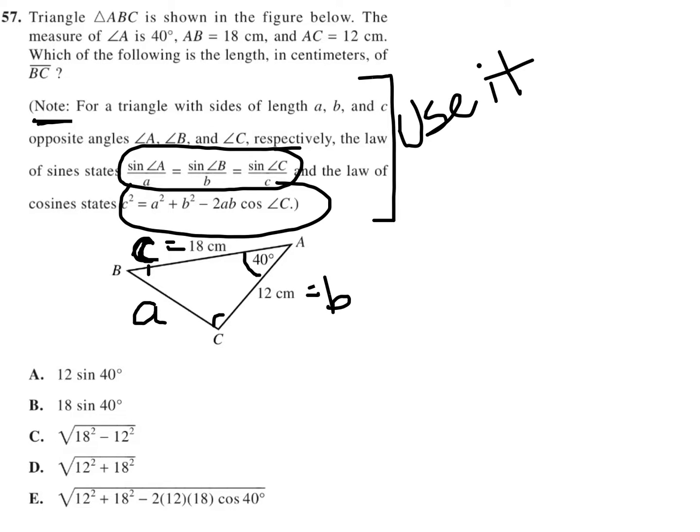So I only have two options here. I can either use the law of sines or the law of cosines. If I try to use the law of sines, that would be sin 40° over side a equals sin of angle B, but I don't know what B is, over 12.